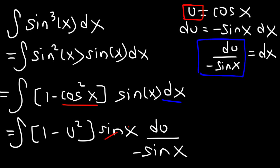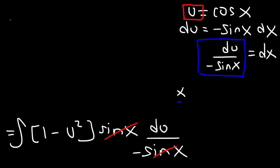We could cancel these two terms, but the negative sine I'm going to move to the front. So this is going to be negative integral 1 minus u squared du.